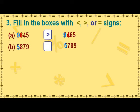In the given numbers, the digit 5 in the thousands place is the same in both numbers. The next digit 8 in the hundreds place of the first number is greater than the digit 7 in the hundreds place of the second number. Hence, the first number is greater than the second number, so we put the greater than sign after the first number.